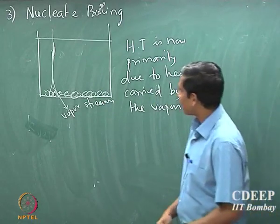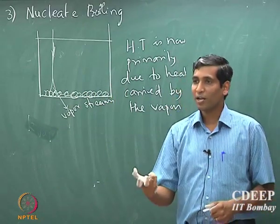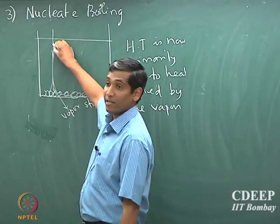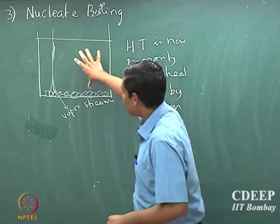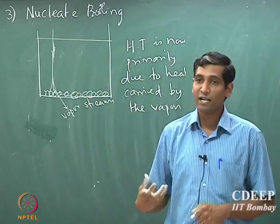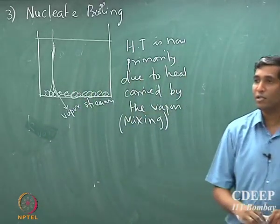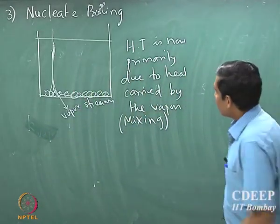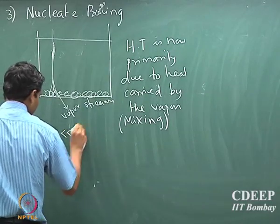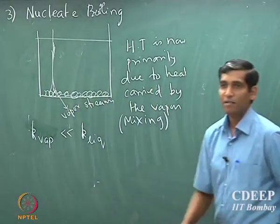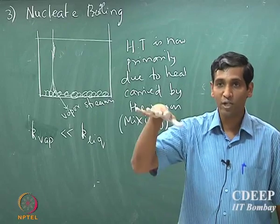The heat is primarily carried by the vapor because the density of the vapor phase is significantly smaller, so the coalescence occurs very quickly and they also move very quickly. This increases recirculation in the fluid in this chamber, and so vigorous mixing is introduced at this particular stage. However, because the conductivity of the vapor is much smaller than the conductivity of the liquid, the net amount of heat transported is going to reduce.